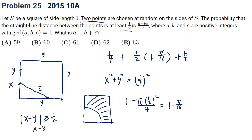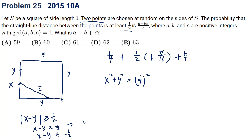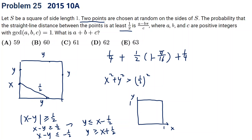Lastly, consider x and y on the same side — another one-fourth chance. We need the absolute value of x minus y to be at least one-half. This means x minus y greater than one-half or x minus y less than negative one-half. The first becomes y less than x minus one-half, and the second becomes y greater than x plus one-half. Drawing this on an xy coordinate from 0 to 1, the shaded area is one-fourth. So the contribution is one-fourth times one-fourth.